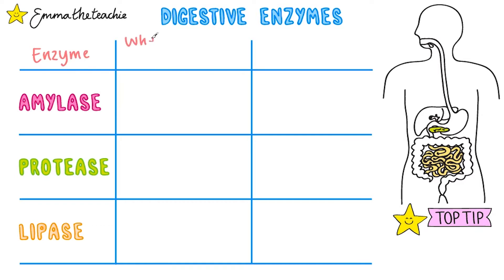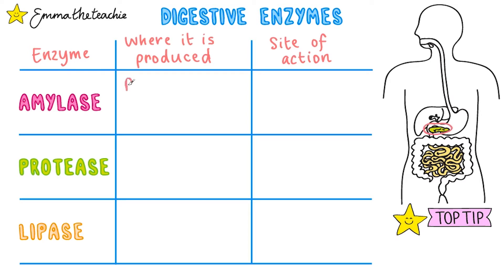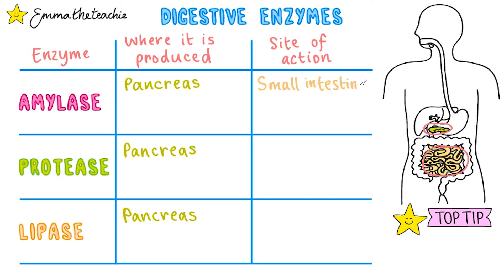As well as knowing what each enzyme does, you also need to know where they are produced and the site of action, i.e. where they work. Here's a top tip: all three enzymes are produced in the pancreas. Another top tip is that the site of action for all three enzymes is the small intestine — that means they all work in this organ. This is really good to know for any exam questions.